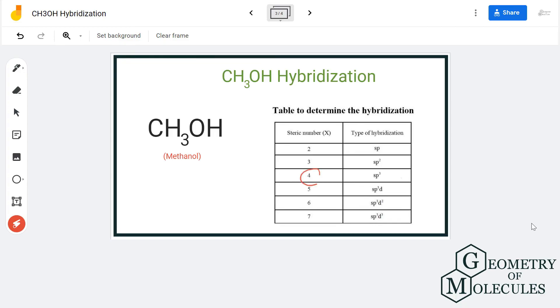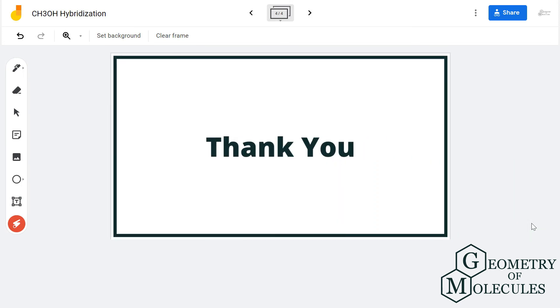Referring to this table, we can see that atoms having steric number as four have sp3 hybridization. So the hybridization for carbon in CH3OH is sp3. For more videos on Lewis structure, molecular geometry, polarity, and hybridization of molecules, subscribe to our channel.